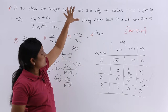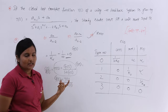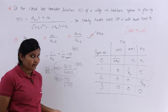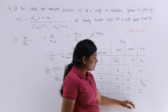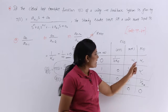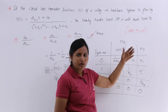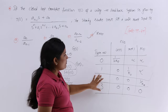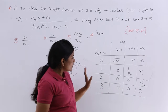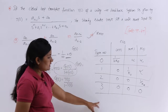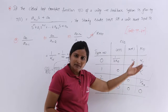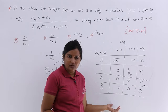To trace the type number from the given transfer function, the power of S in the denominator represents the type number. Here the power is N, which is greater than 3. For a type number greater than 3, the steady state error is 0 for any type of input — whether unit step, ramp, or parabola. So using this table, ESS = 0 directly.